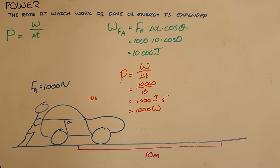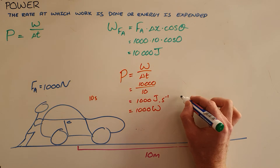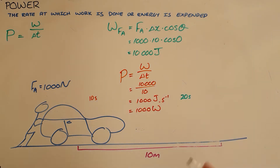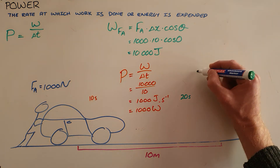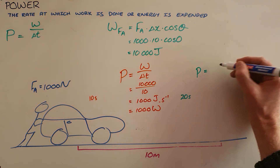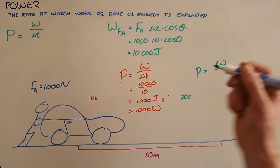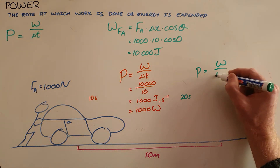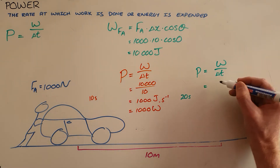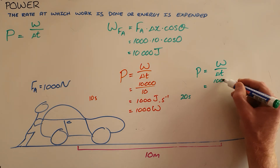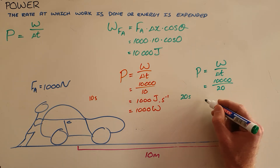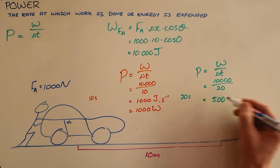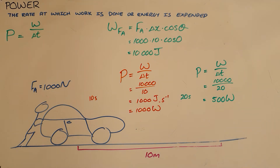What would happen if this took 20 seconds instead? It is still possible to apply a 1000 newton force and move the car 10 meters, so the work done is still the same. But the time has now changed, which means less power was required. The work done is still 10,000 joules, but with a time of 20 seconds, the power output is only 500 watts.